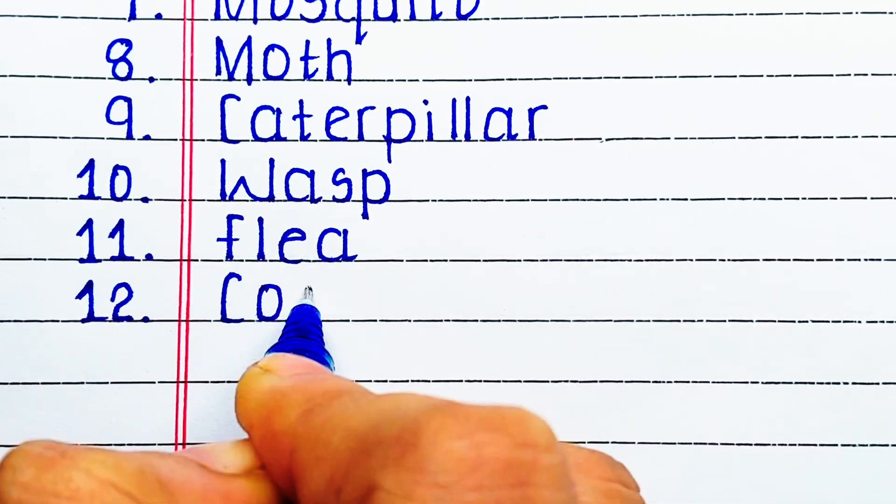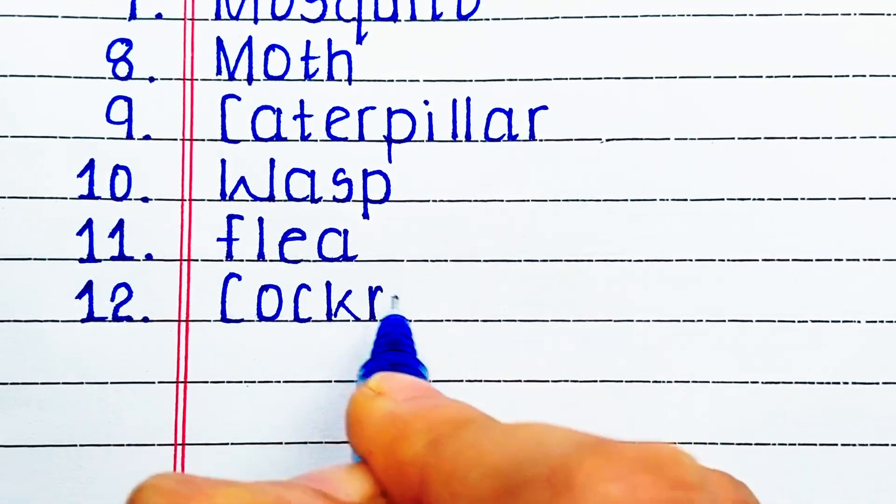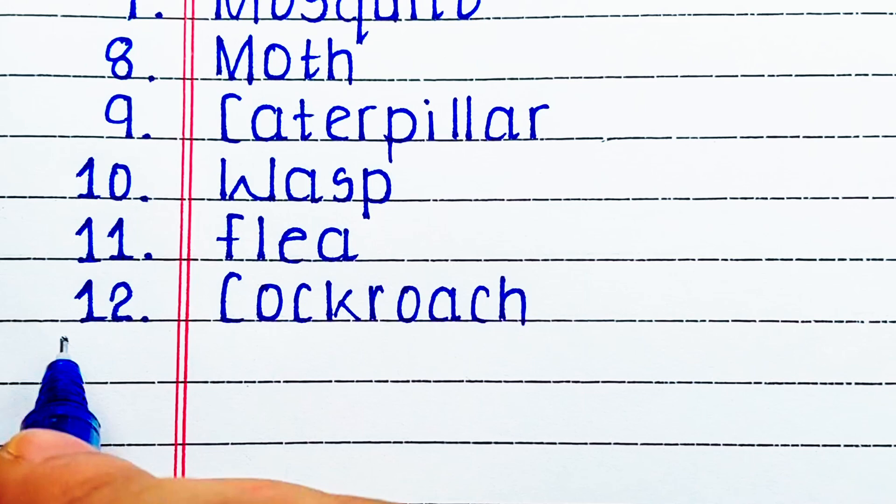The next insect in our list is F-L-E-A, flea. Next up we have C-O-C-K-R-O-A-C-H, cockroach.